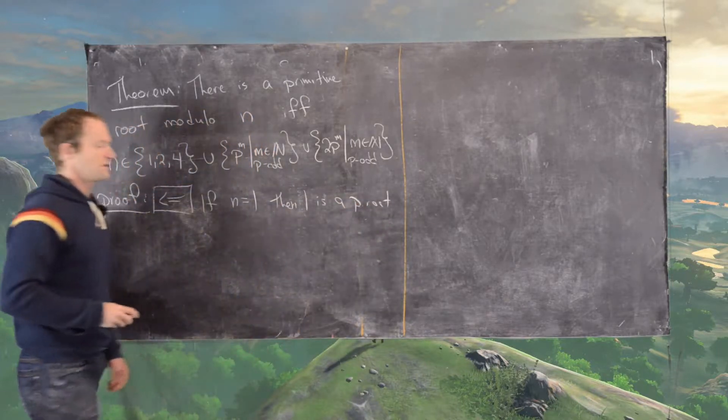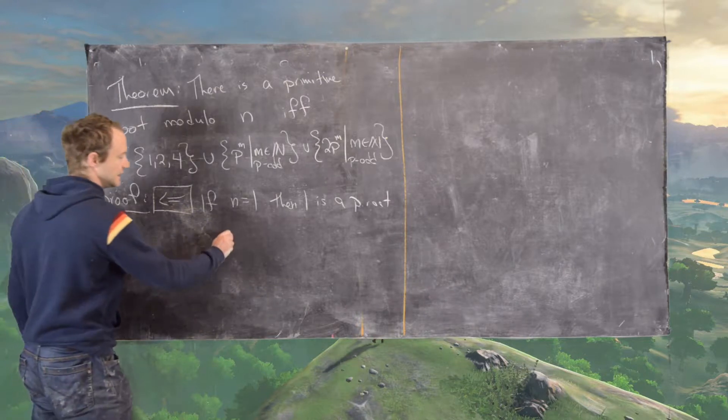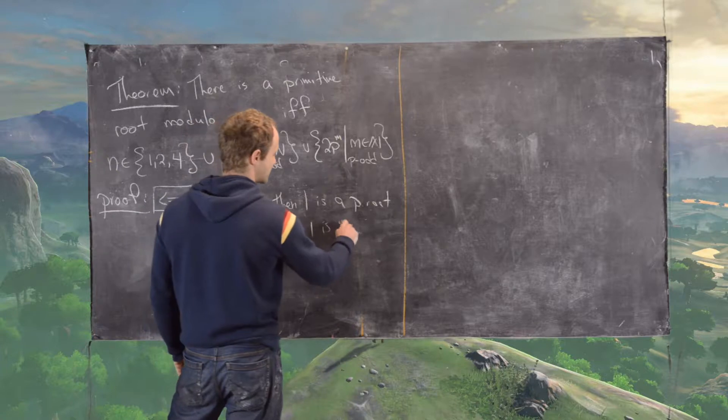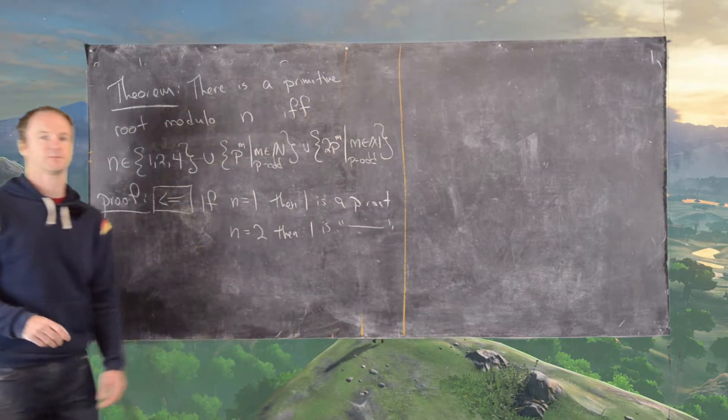Now if n equals 2, then 1 is also a primitive root.